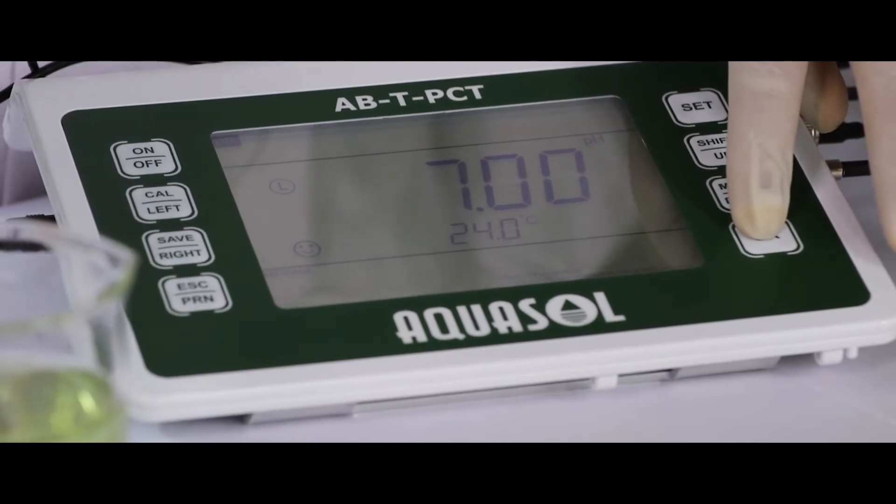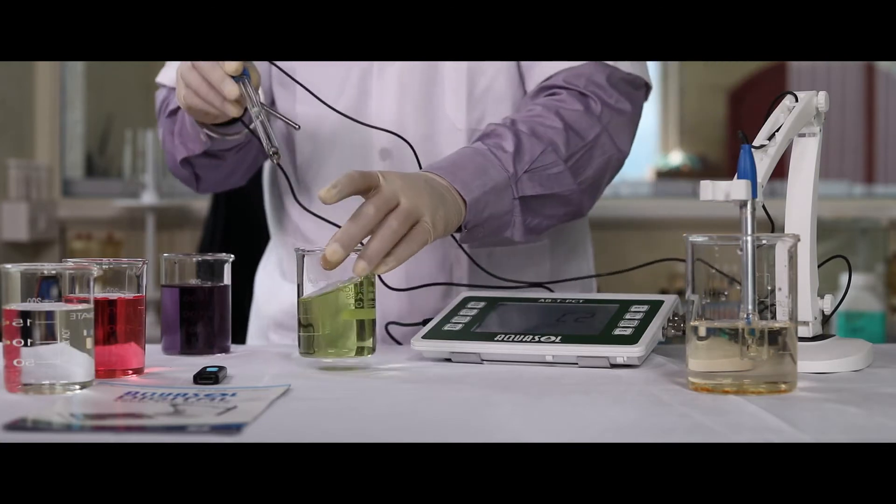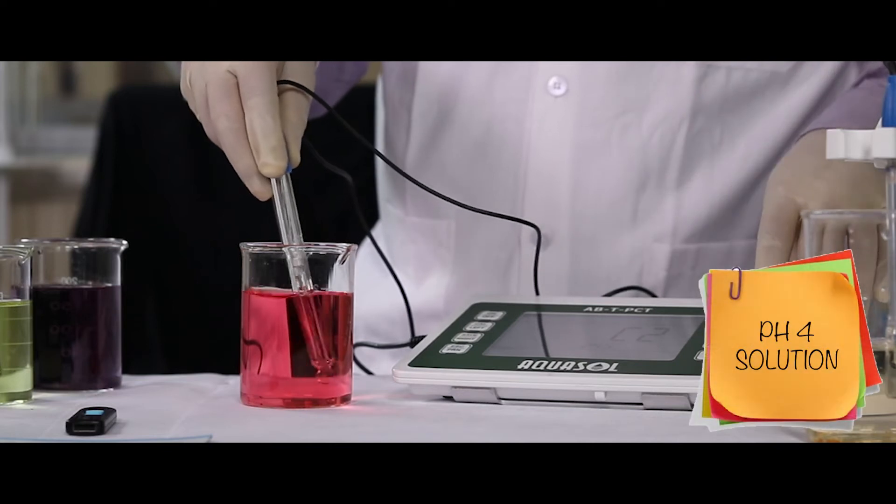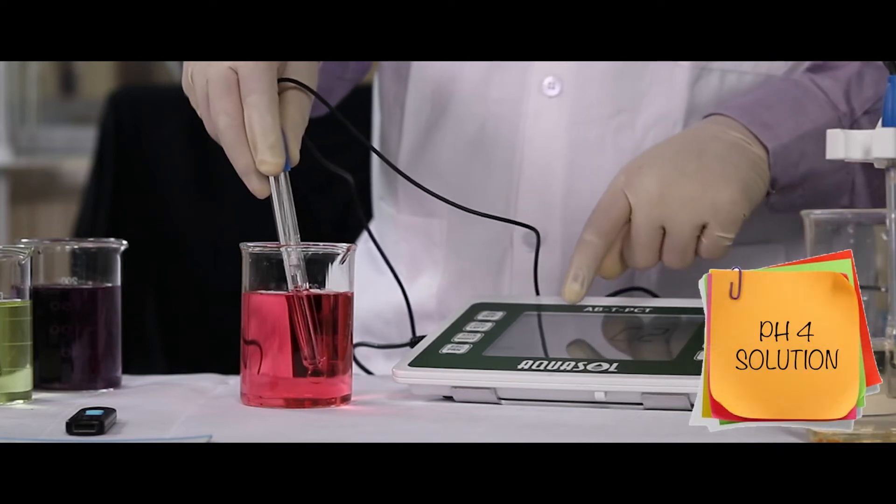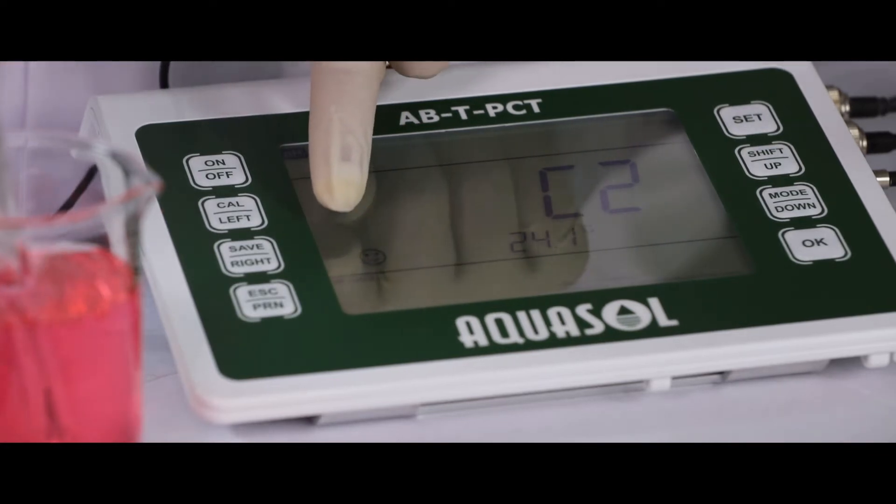The meter will ask for C2. Standard pH 4 solution is used for C2. Clean the electrode and dip it in pH 4 buffer solution. Once the meter displays smiley, press OK to calibrate.